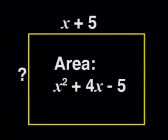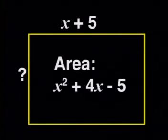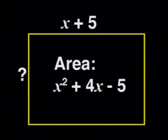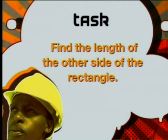In our next lesson we are going to continue with this, but I'm going to show you a shorter way to factorize a trinomial without a diagram. Right now though, you need to do your task. I'm going to give you certain information about a rectangle. One side of a rectangle is x plus 5. The area of the rectangle is x squared plus 4x minus 5. We do not know the length of the other side. Your task is to find the length of the other side. You can use any method. Remember to join me for the next lesson where we will learn an easy way to factorize a trinomial without using a diagram.